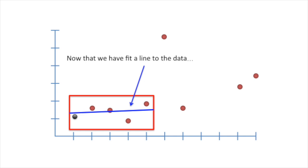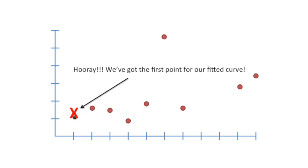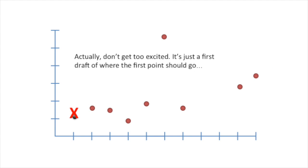Now that we have fit a line to the data, we'll use it to define the first point in the fitted curve. Hooray! We've got the first point for our fitted curve. Actually, don't get too excited. It's just a first draft of where the first point should go. More on that later. For now, let's work on the second point.